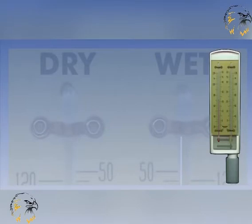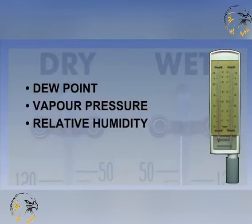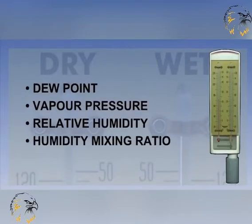The closer they are, the more humid the air is, and vice versa. From these two readings, many values can be calculated, including the dew point, vapour pressure, relative humidity, and humidity mixing ratio.